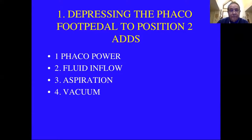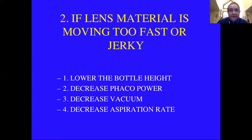Question two: If lens material is moving too fast or jerky, what do you need to do to correct that? Do you lower the bottle height, decrease the phaco power, decrease the vacuum, or decrease the aspiration rate?